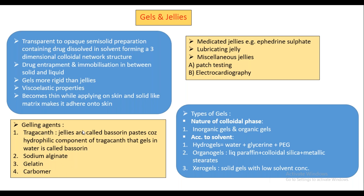When it comes to tragacanth, these are basically jellies which are also called bassorin paste. The reason to call tragacanth jellies as bassorin paste is the hydrophilic component of tragacanth, which will swell in water and lead to that gelling. So tragacanth is basically a gelling agent with a hydrophilic and hydrophobic component. The hydrophilic component of tragacanth swells after coming in contact with water and forms a gel. This hydrophilic component that gels in water is called bassorin. That's the reason tragacanth jellies are also called bassorin paste.